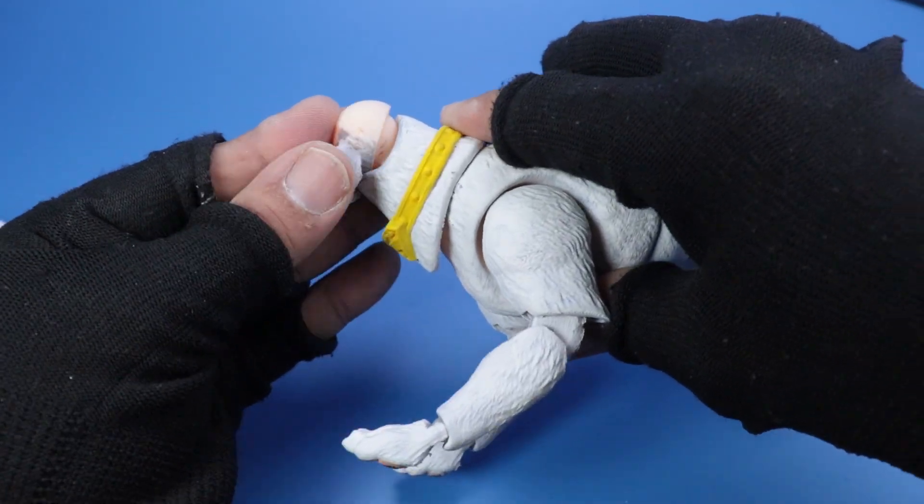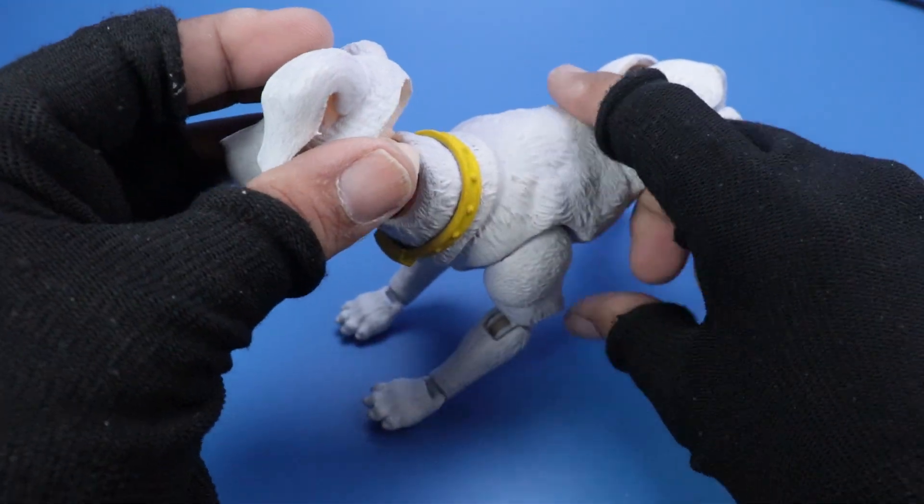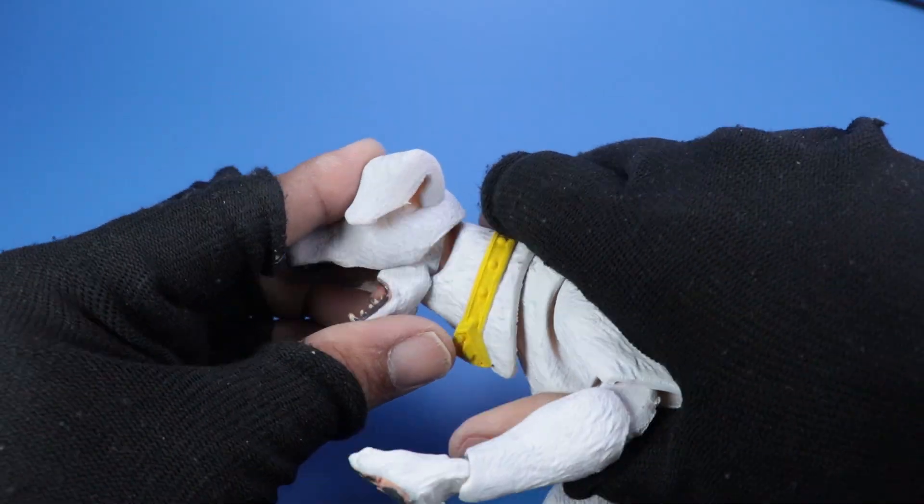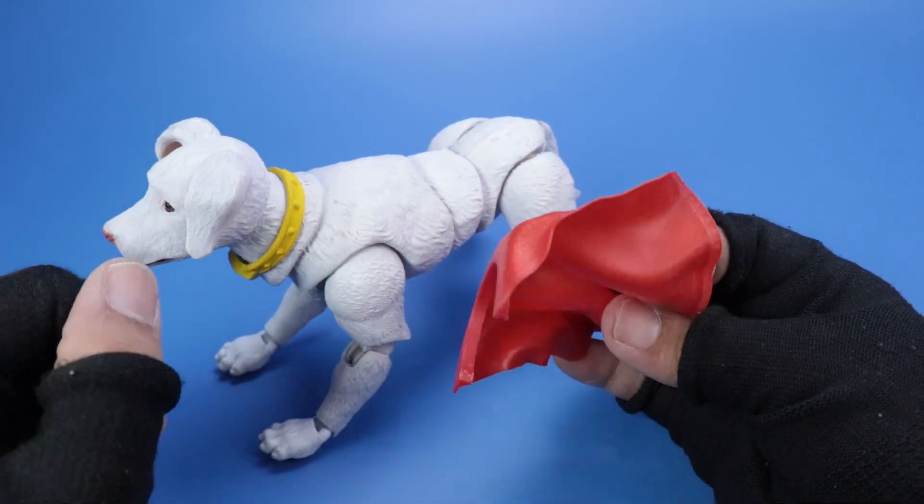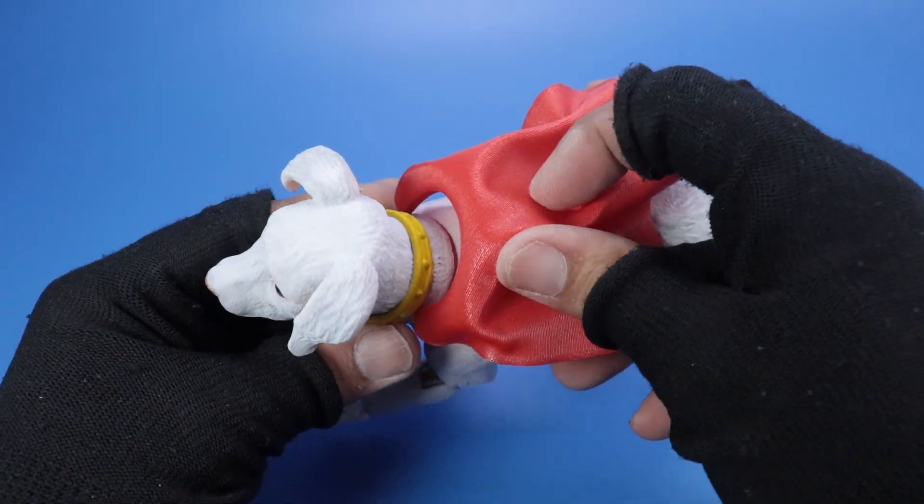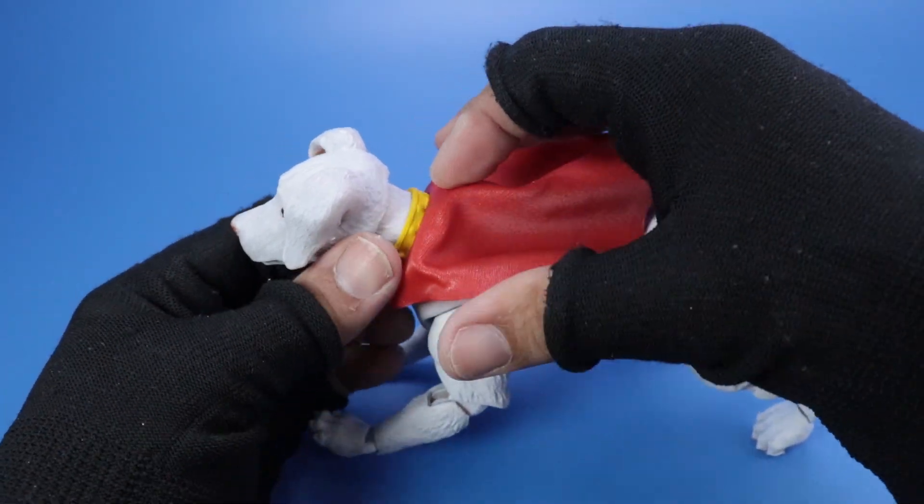Now onto the head. Pop the jaw onto the neck peg ball. Then press the head onto the jaw. And that's it. Oh, and remember the cape we heated up earlier? Just clip it around the neck, right below the collar. And we're done!